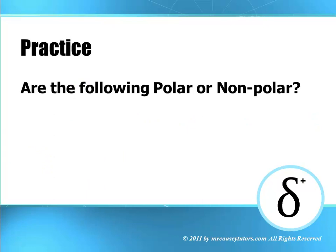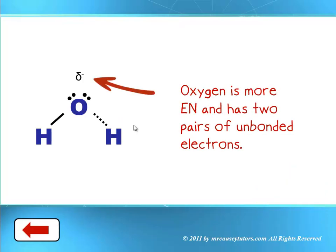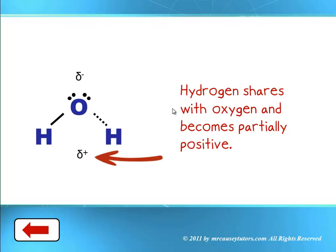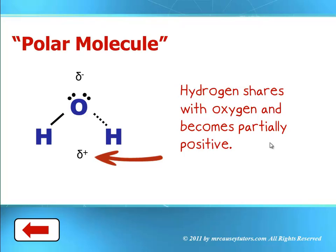Let's do a little practice. Are the following nonpolar or polar? Water — it's polar. Let's see why. Oxygen is more electronegative and has two pairs of unbonded electrons, which creates a negative end. Hydrogen shares with oxygen and becomes partially positive. And so what do we get? We get a partially positive region — a polar molecule.